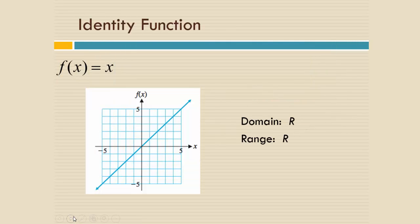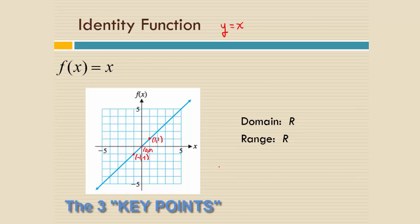First of all, what we call the identity function, and you do need to know that term. The identity function is referring to the fact that y is identical to x in this function, y = x. This is a graph you're familiar with. It's the graph of a line. It goes through the y-intercept 0 and has a slope of 1. So I'm labeling three points on here: (1, 1), (0, 0), and (-1, -1).